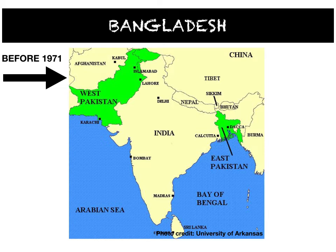In 1947, when India got its independence, it was also partitioned. Two units of Pakistan were created — one to the western side of India and one to the eastern side of India. East Pakistan is what is known as today's Bangladesh. These two units were culturally very different from each other.